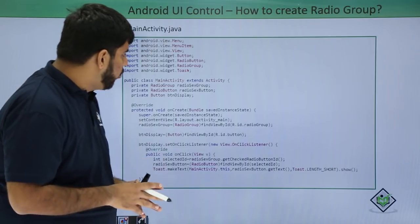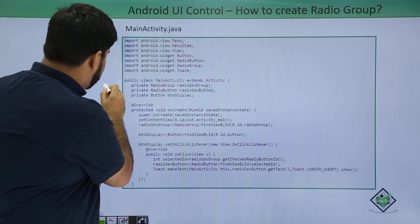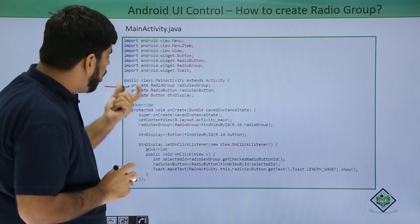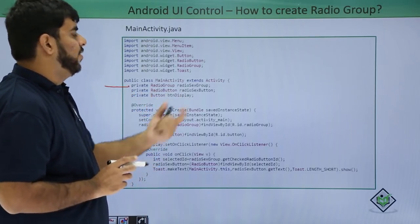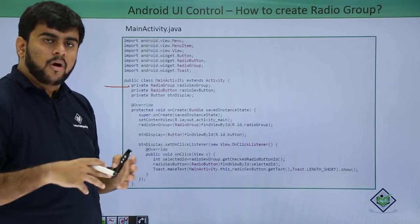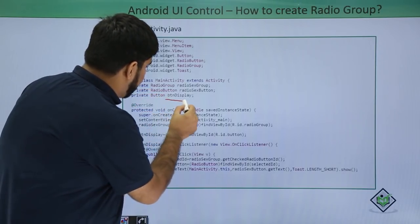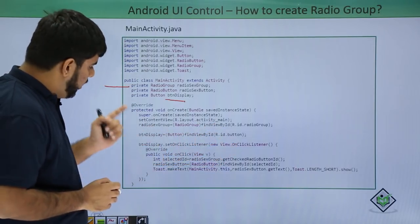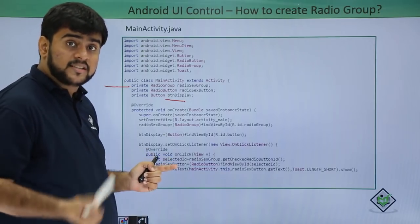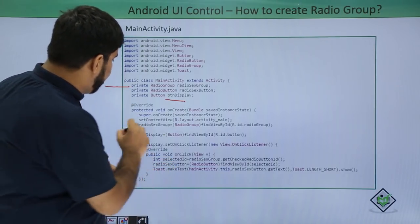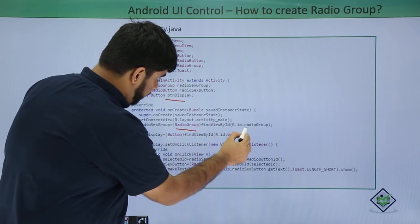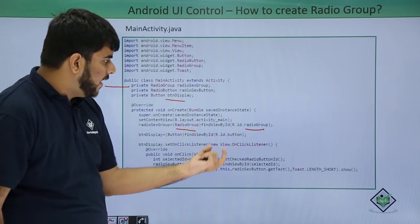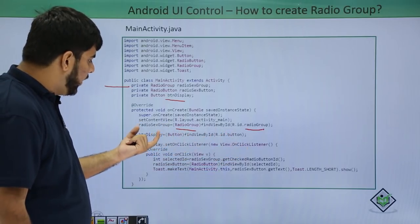Here is my radio group code. I make the object of the radio group and name it as radio6Group. Then I make the object of the radio button and name it as radio6Button. This is invoked on the click of a button named button display. Before this, I have identified the radio group using the findViewById method, finding the id of the group — that is R.id.radioGroup — and I have saved that group in my radio6Group.